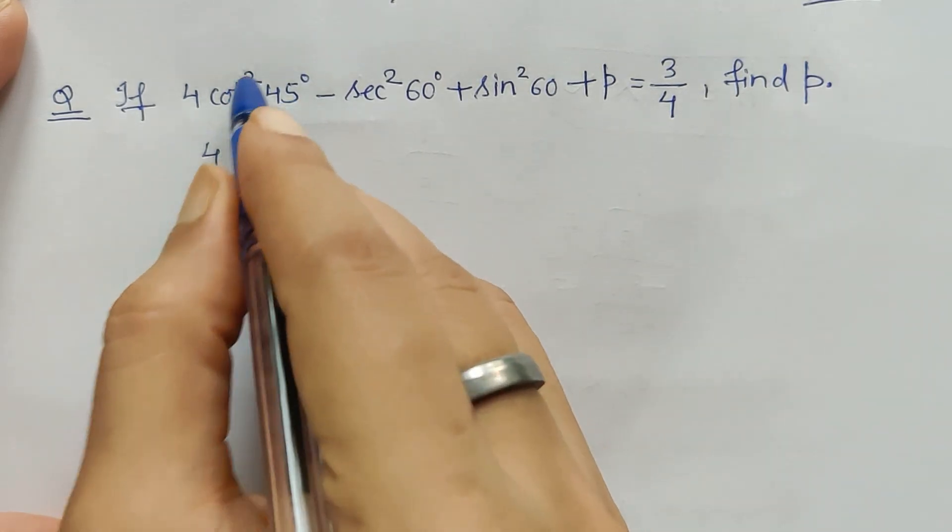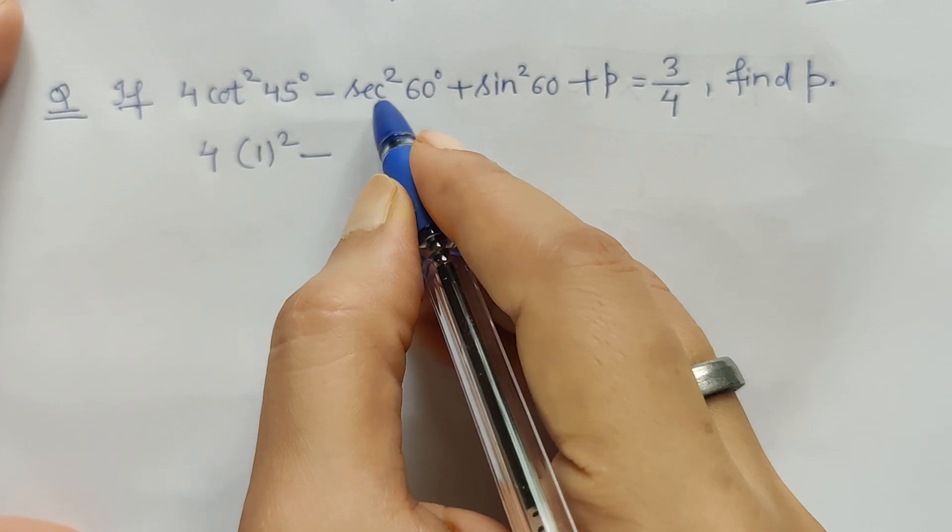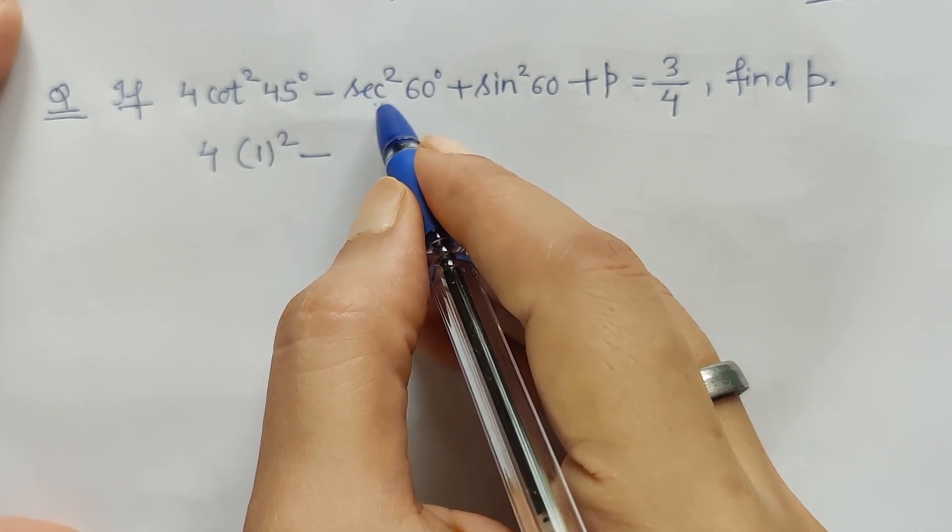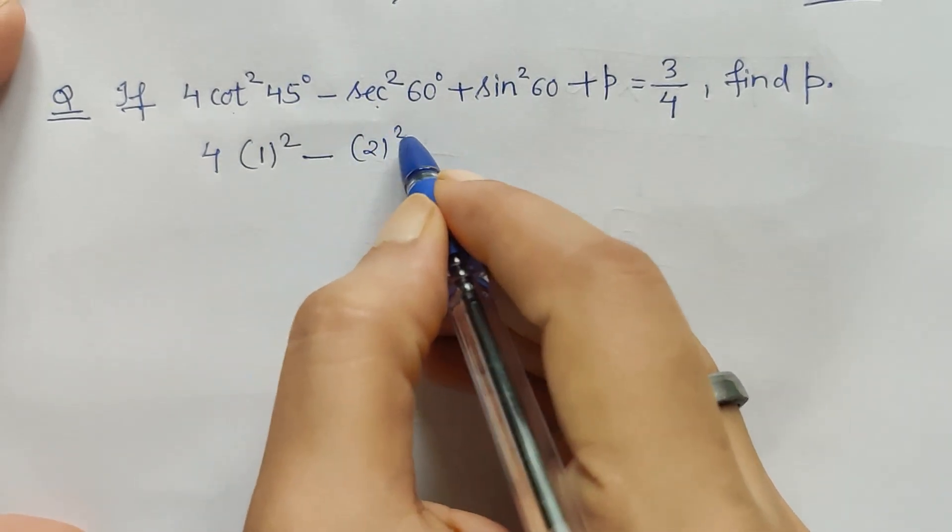Minus sec is the reciprocal of cos. Cos 60° is 1/2, so the reciprocal of 1/2 is 2. So this will be 2 squared.